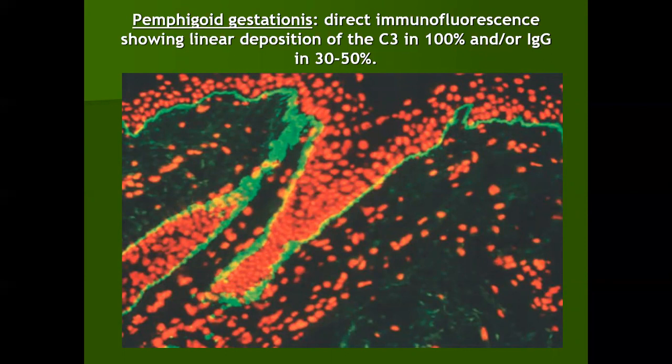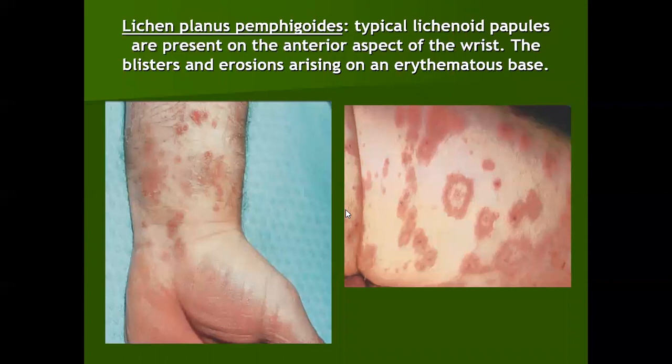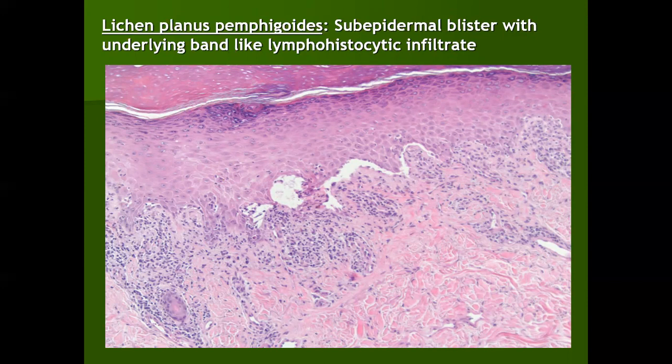Lichen planus pemphigoides is a type of lichen planus in which we see typical lichenoid papules along with blisters of bullous pemphigoid—two clinical disorders in combination. Blisters are not seen over the lesions of lichen planus; if blisters are seen on lichen planus lesions, it is called bullous lichen planus, not lichen planus pemphigoides. Histologically, at some places there is interface change with band-like lymphohistiocytic infiltrate, and at other places sub-epidermal blistering with eosinophils.